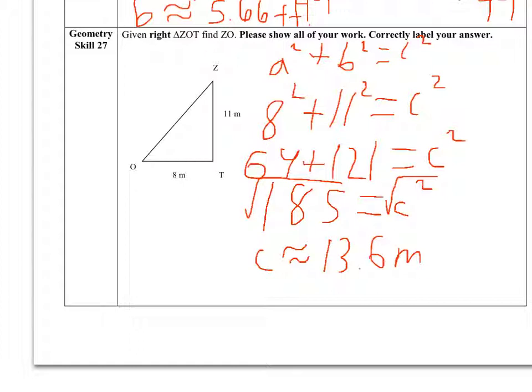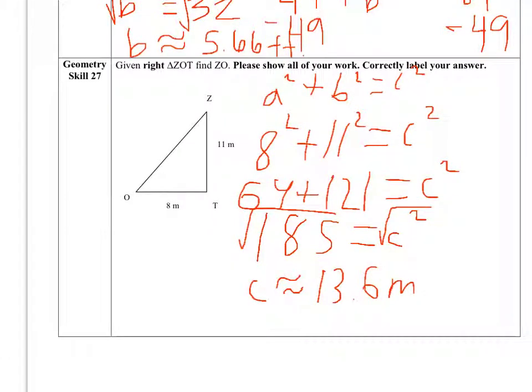We also used Pythagorean's theorem, plugged in the given information, and this time solved for C, which equals length ZO. C equals approximately 13.6 meters. Thanks for watching, and I hope you learned how to solve problems using Pythagorean's theorem.